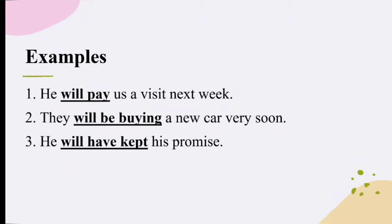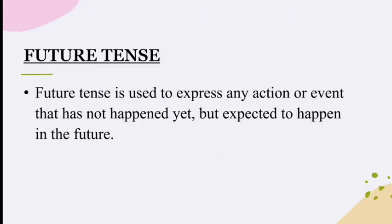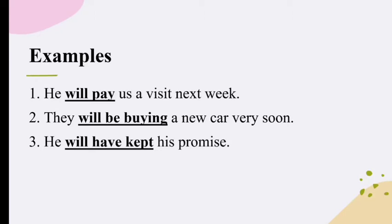Now let us see what future tense is. Future tense is used to express any action or event that has not happened yet, but is expected to happen in the future. It means the action has not taken place yet, but it might happen at any point of time in the future. Like in Example 1, 'He will pay us a visit next week' — it means the person has not visited us yet, but there is a possibility he will be visiting us next week, which means in the future.